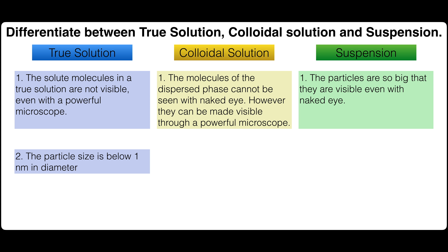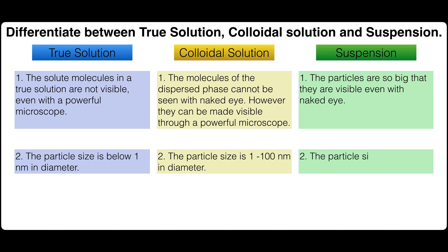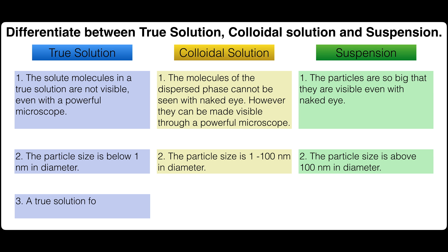The particle size in a true solution is below 1 nanometer in diameter. The particle size in a colloidal solution is 1 to 100 nanometers in diameter. The particle size in a suspension is above 100 nanometers in diameter.